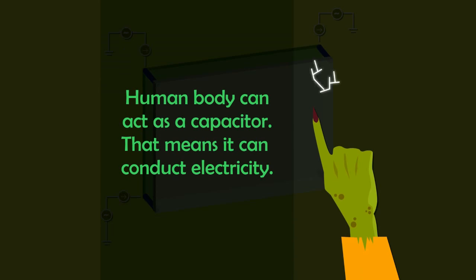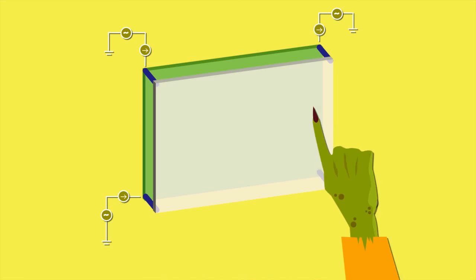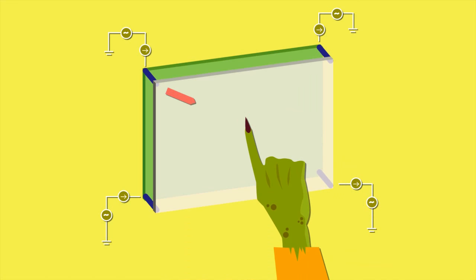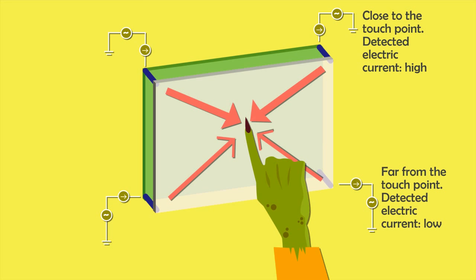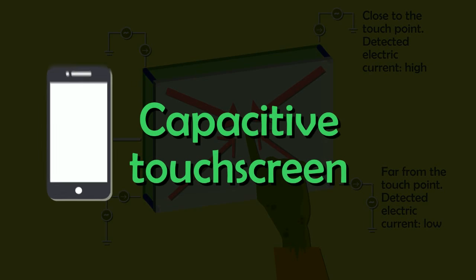Our body can conduct electric current. So when a user touches the screen with their finger, some of the charge is transferred to the user. This is sensed at each corner of the screen. The electric current value at each corner will differ according to the touch point. This relative difference aids the software to find exactly where the touch took place, and it carries out the function corresponding to that spot.